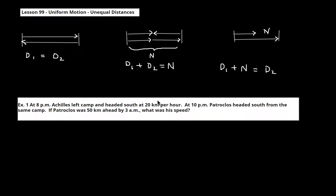This is lesson 99 of Saxon Algebra 1. This lesson is called Uniform Motion and Unequal Distances. This is our third type of uniform motion problem. They're called uniform motion because the people go at a constant speed — 50 miles per hour or whatever they give you — the entire time.